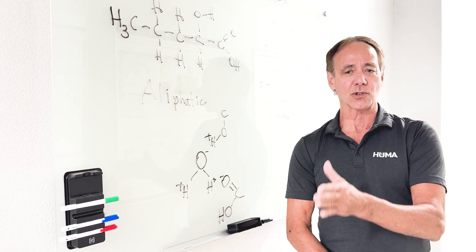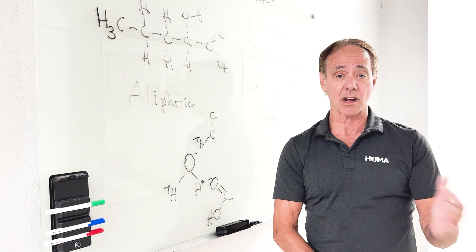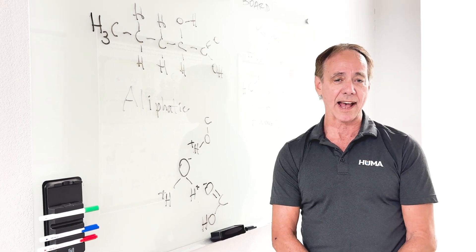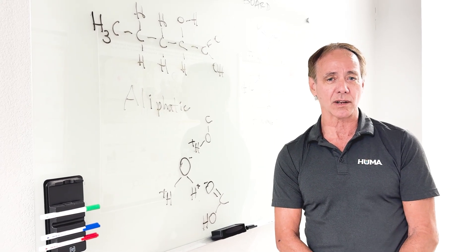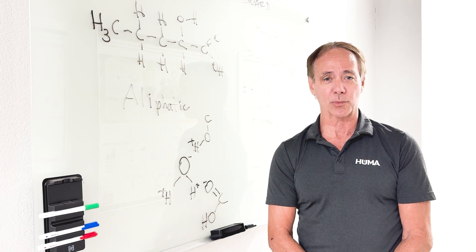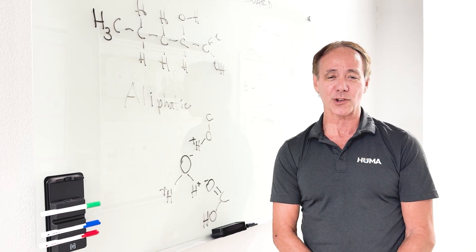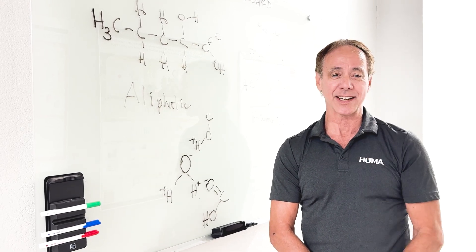So humic acids are soluble at high pH, but insoluble at low pH. And this is why you don't want to add a humic acid solution to an acidic fertilizer, because they'll precipitate and then clog your spray heads if you're using it that way.